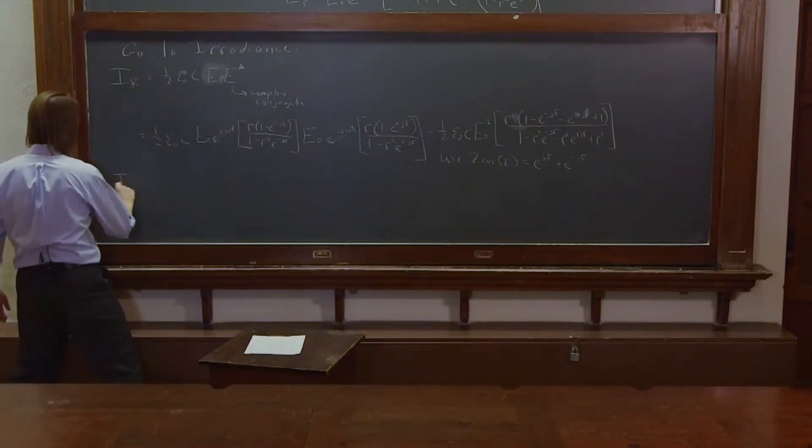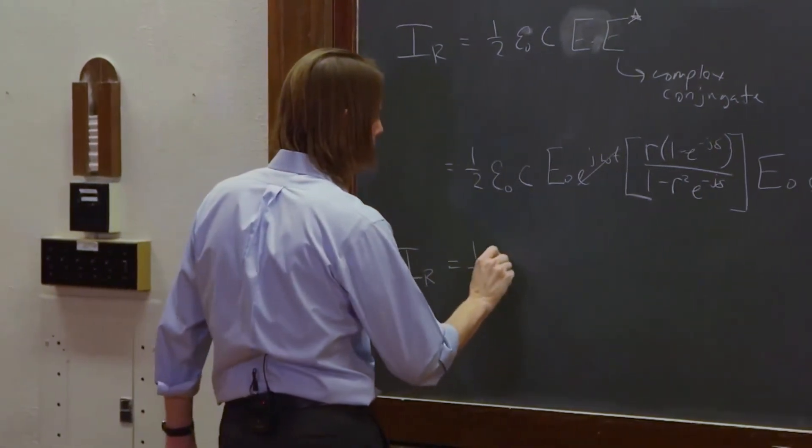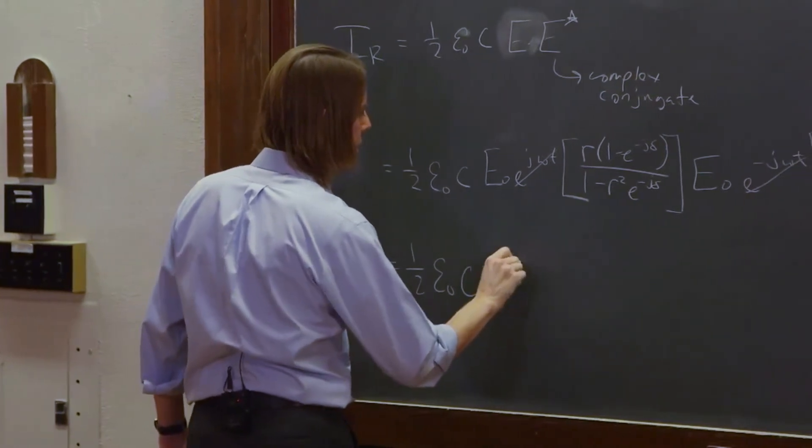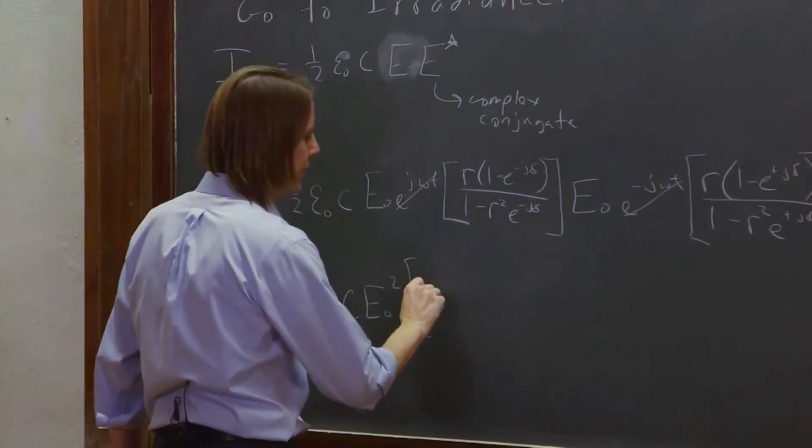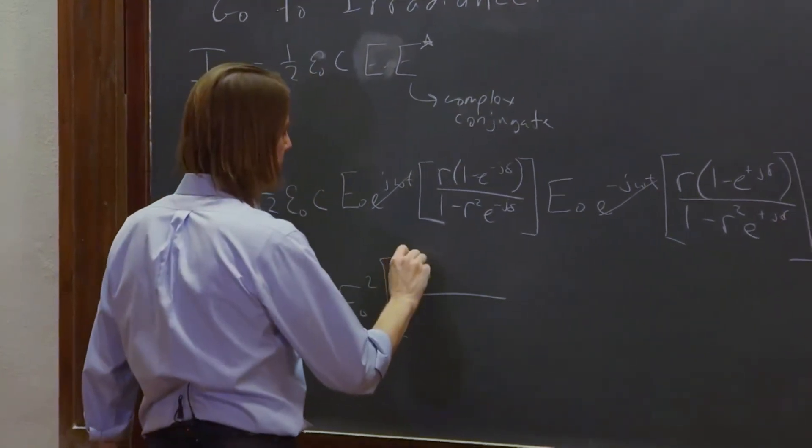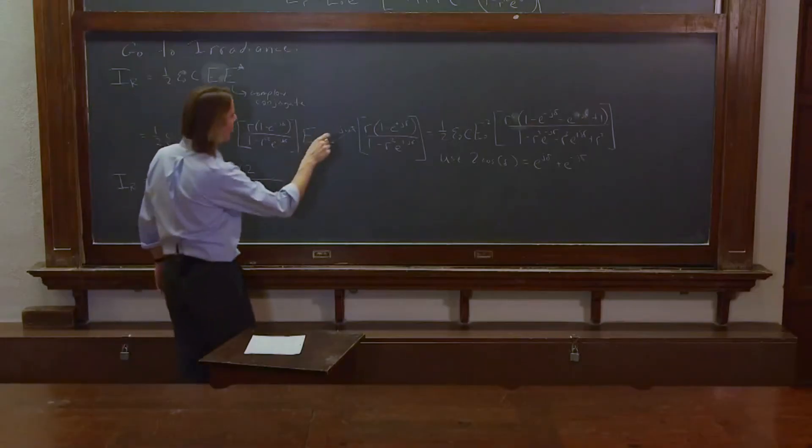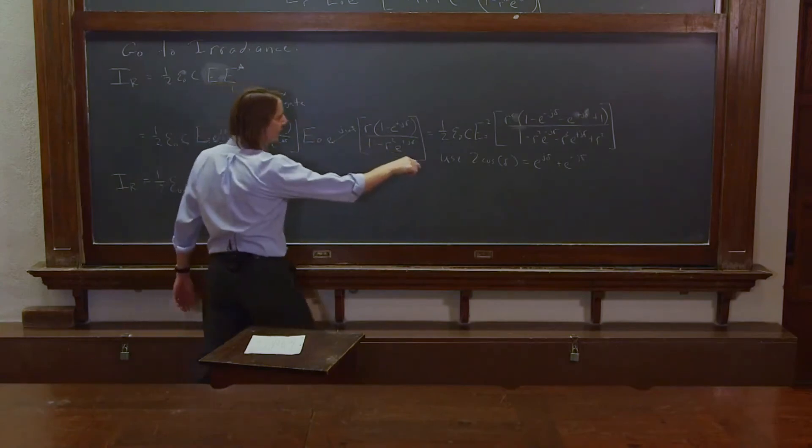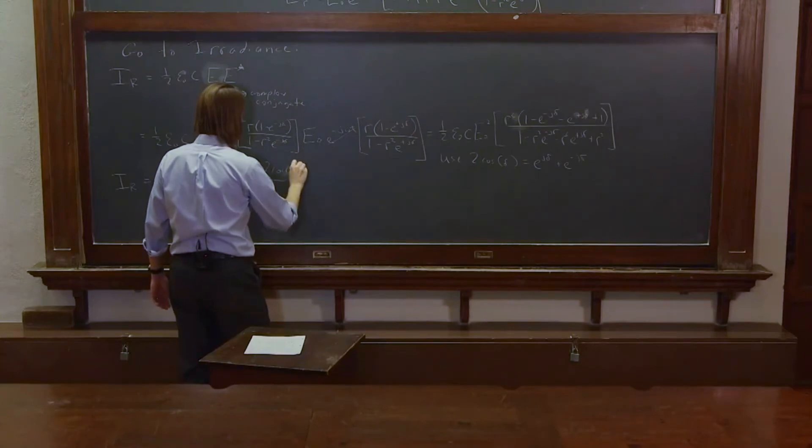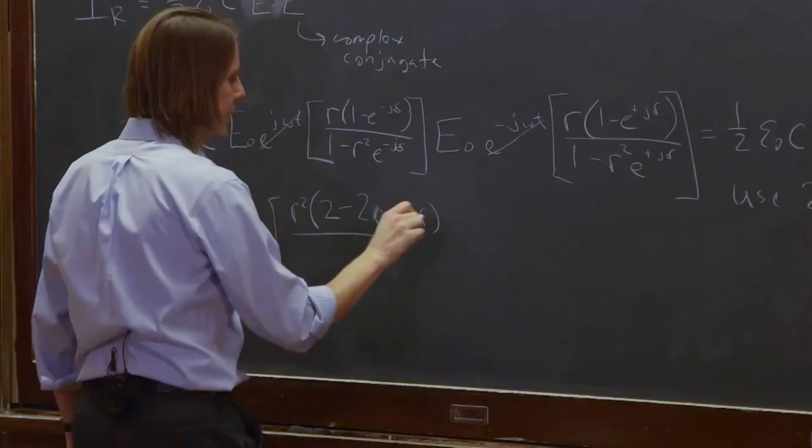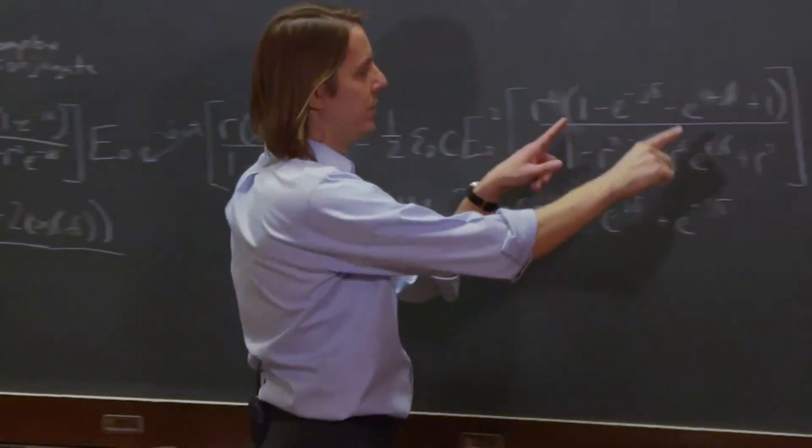Then we end up with the irradiance at R is 1/2 epsilon naught C E naught squared. And it looks like this term is not going away. We have R squared times 2, and then it looks like minus 2 cosine delta. These two terms make 2 cosine delta. That's a C. Okay. And that 2 just comes from these two 1s right here.